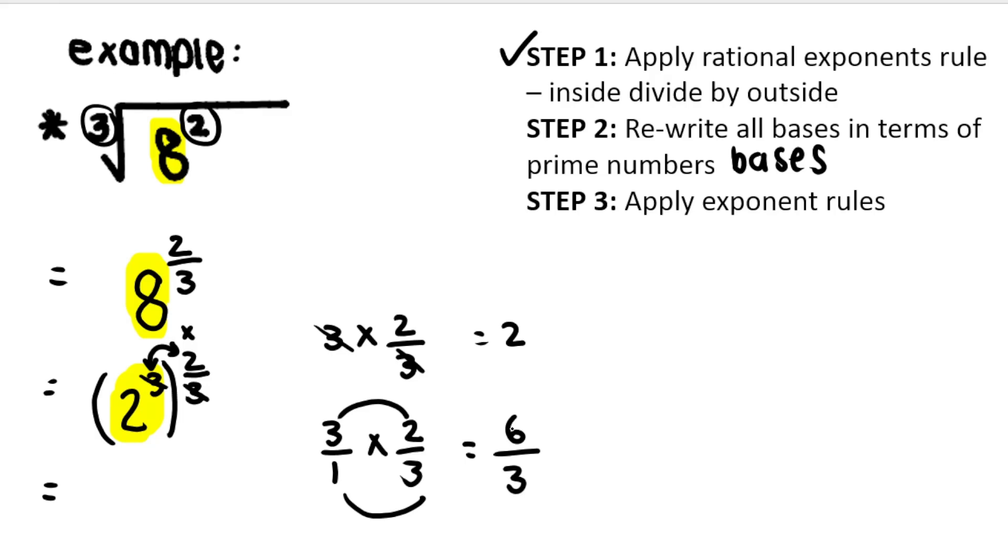You do top times top gives you six. Bottom times bottom gives you three. Six divided by three gives you two. So it's two to the power of two, which is four. And that's how you do it without a calculator.